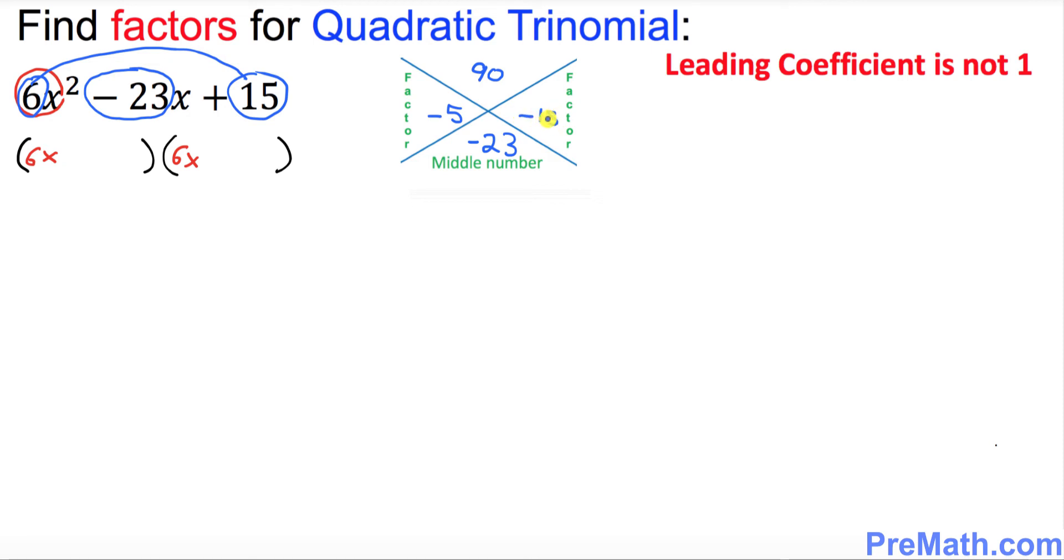If you multiply these, negative 5 and negative 18, that's gonna give you positive 90, and if you add them that's gonna give you negative 23. So put down negative 5 in the very first parentheses right up here and put down negative 18 in the second parentheses.